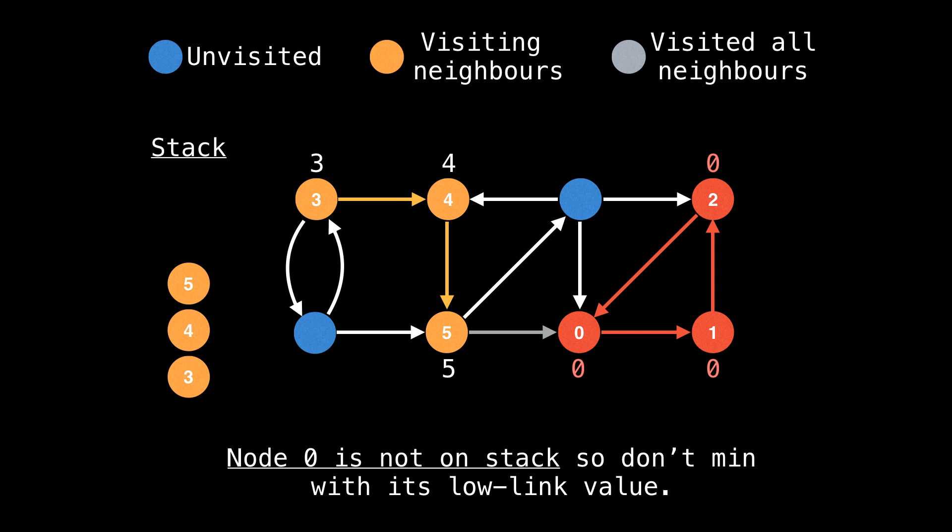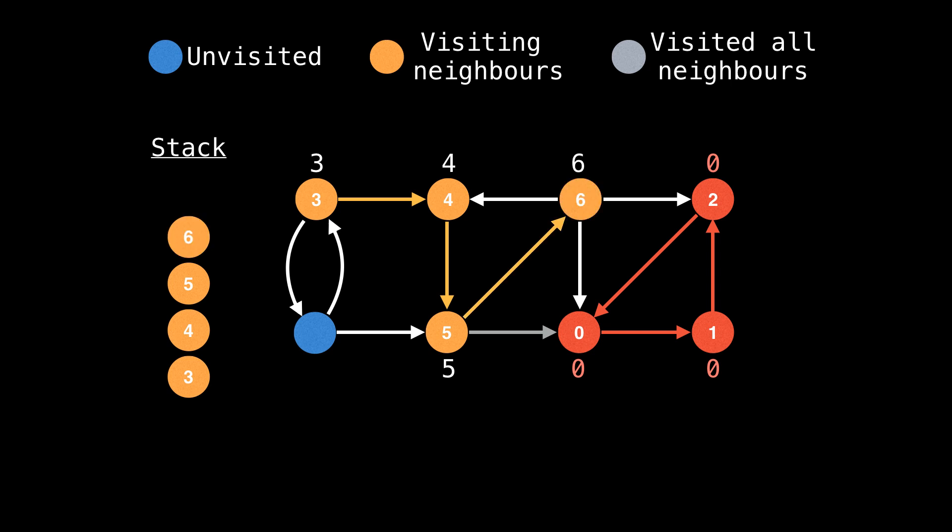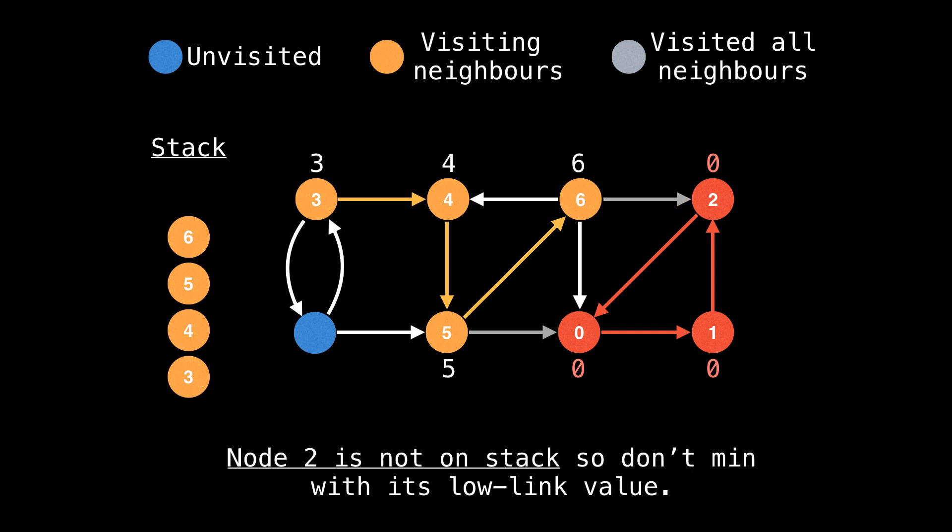This is actually very good, because if we did, then we would contaminate the strongly connected component that node five is part of with a lower low link value that node zero has to offer. So let's go to node six. Now we have three edges to choose from. Let's take the one on the right. Node two is not on the stack, so don't min with its low link value.